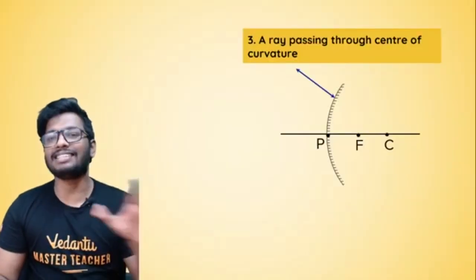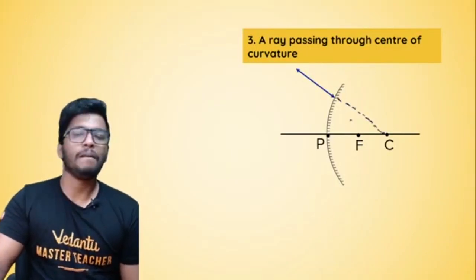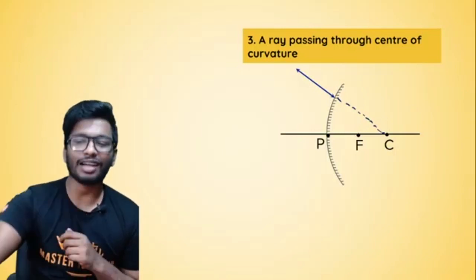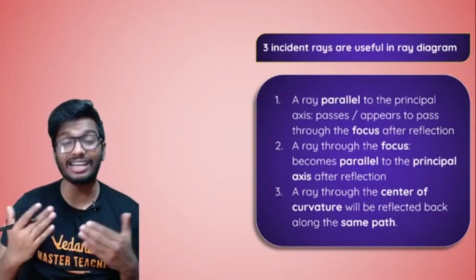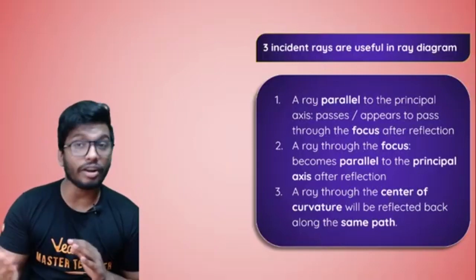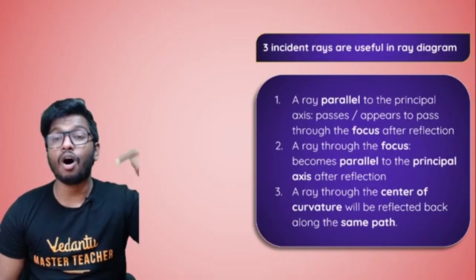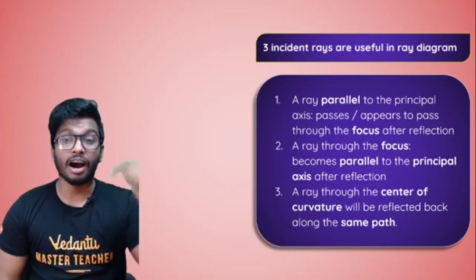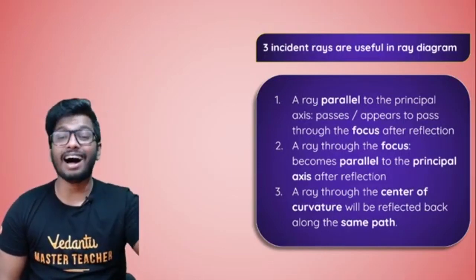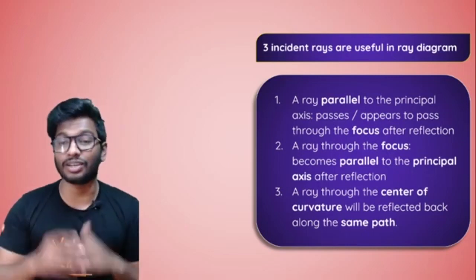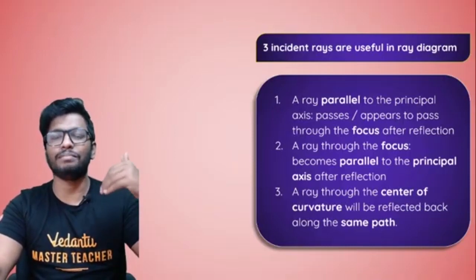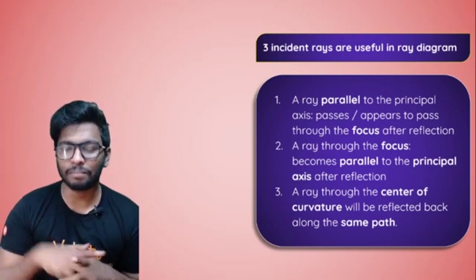Finally, when the ray passes through the center of curvature, exactly the same thing happens — after reflection it passes straight back through the center of curvature in that exact same direction. To conclude: a ray parallel to the principal axis passes through or appears to pass through the focus; a ray through the focus becomes parallel to the principal axis; a ray through the center of curvature bounces back along the same path. These are very important basics for ray diagrams.